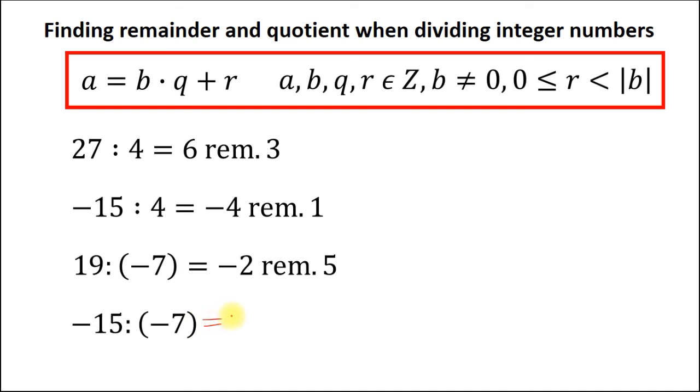And it should be equal to 3. So 3 times minus 7 is equal to minus 21. And we should add 6 to minus 21 to get our initial dividend of minus 15. So the quotient is 3 and the remainder is 6.